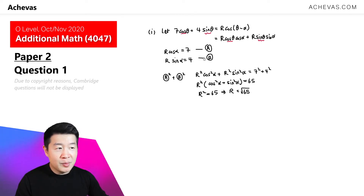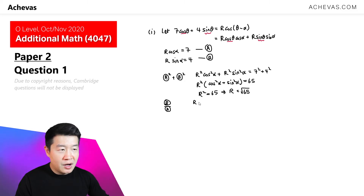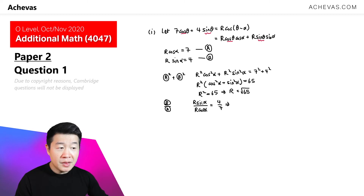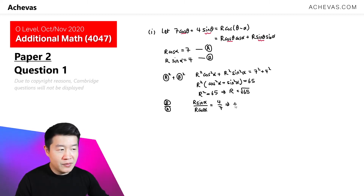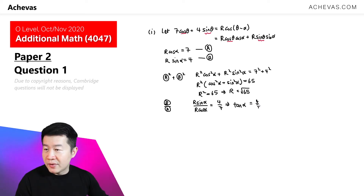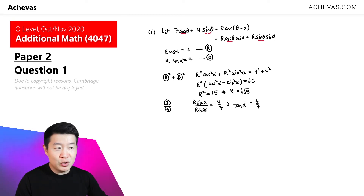To solve for α, I'm going to take equation B divided by equation A. On the left-hand side, R sinα divided by R cosα — the R's cancel — giving tanα. On the right-hand side, we have 4/7. It is given by the question that α is between 0 and π/2, so we are working with just an acute angle for α.